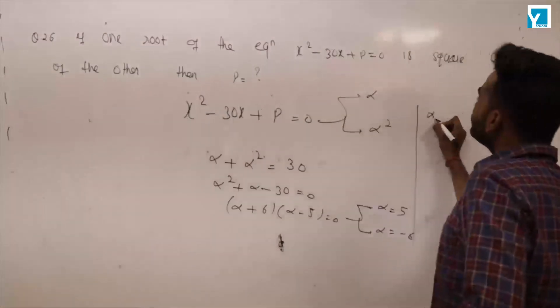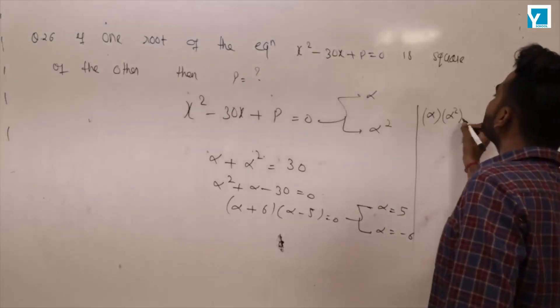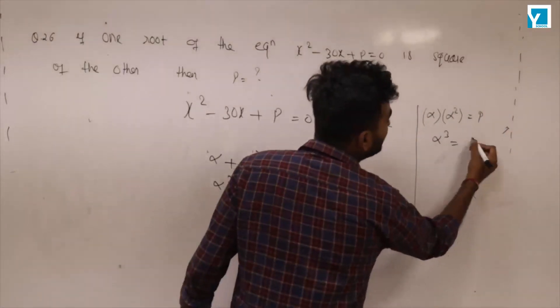for product of the roots, alpha into alpha squared equal to p, which means alpha cubed equal to p.